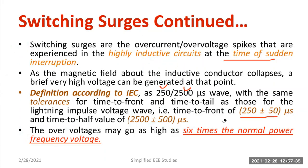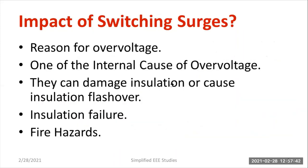Now let us discuss further details. Remember the definition and how to interpret switching surges based on IEC standard. The major impacts of switching surges are: first, it causes overvoltage — almost six times the voltage will be generated compared to normal voltage. For example, if normal voltage is 400V, imagine 400 times six. That much magnitude will be produced. It is also one of the internal causes of overvoltage.